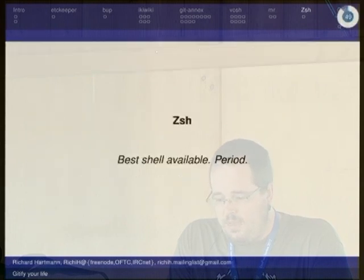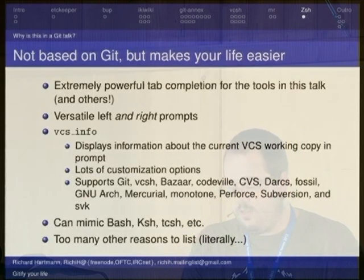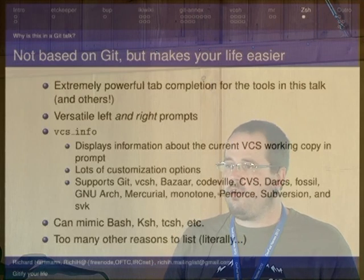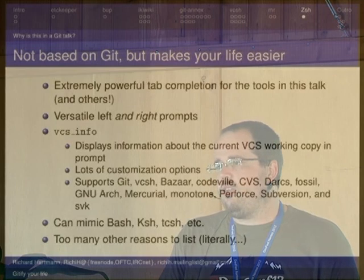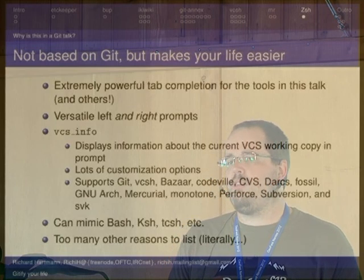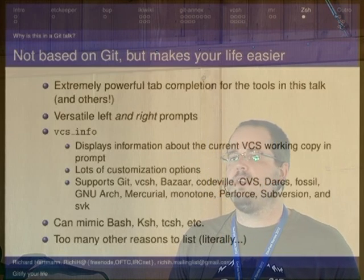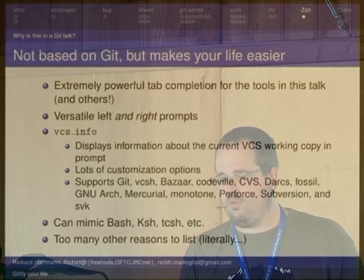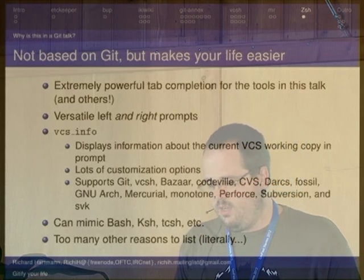One last thing — it's not git based, but zsh: it's a really powerful shell. You should consider using it. It has very good tab completion for all the tools listed here, more than bash. It has a right-side prompt which will automatically disappear if it needs to, very convenient for displaying useful information. It will automatically tell you about being in a git repository, subversion repository, or vcsh repository by means of vcsh info — which means you'll be warned when you are within a vcsh context and might break things if you do something wrong.